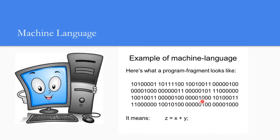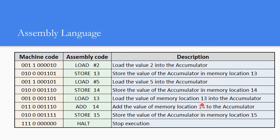It was very difficult for humans to memorize all the bit combinations to perform each operation. If I want to perform an addition, it will have a combination of zeros and ones, and even a minute mistake in the machine code may not give a proper result. So a more human-friendly version of machine code was developed, which we call assembly language. Rather than remembering the machine code, assembly language uses mnemonic codes like LOAD, STORE, ADD, etc., so users don't have to remember the entire binary machine code.